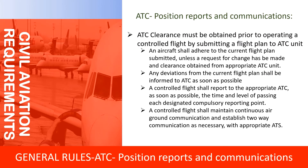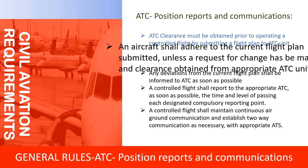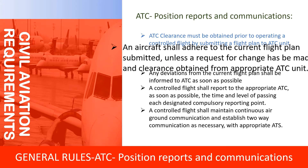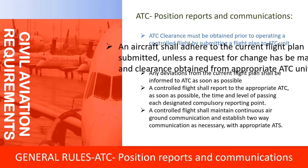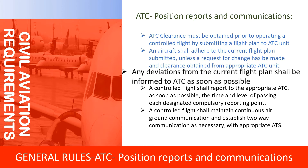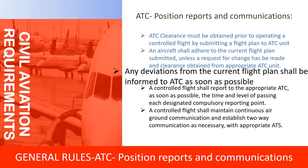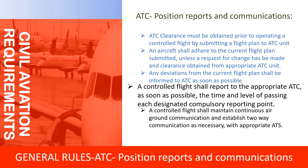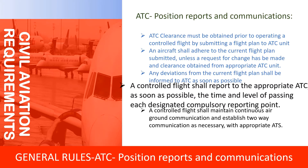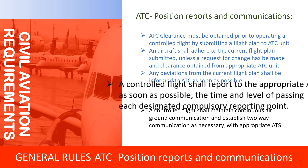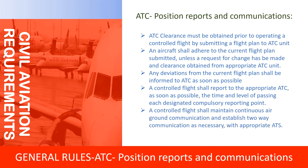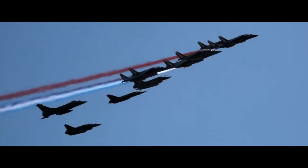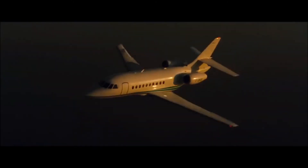Rules regarding ATC position reports and communications: ATC clearance must be obtained prior to operating a controlled flight by submitting a flight plan to the ATC unit. An aircraft shall adhere to the current flight plan submitted, unless a request for change has been made and clearance obtained from the appropriate ATC unit. Any deviations from the current flight plan shall be informed to ATC as soon as possible. A controlled flight shall report the time and level of passing each designated compulsory reporting point. A controlled flight shall maintain continuous air-ground communication and establish two-way communication with appropriate ATC.